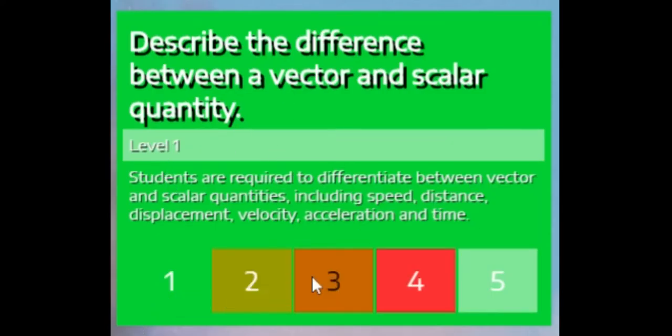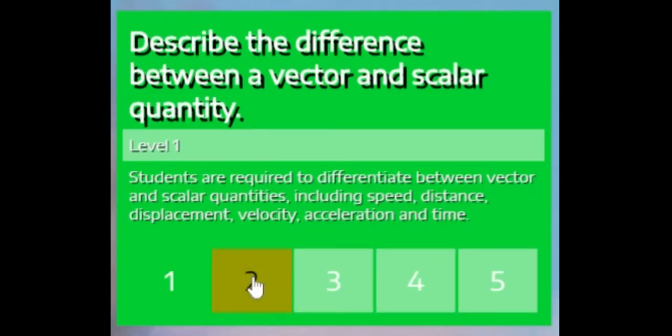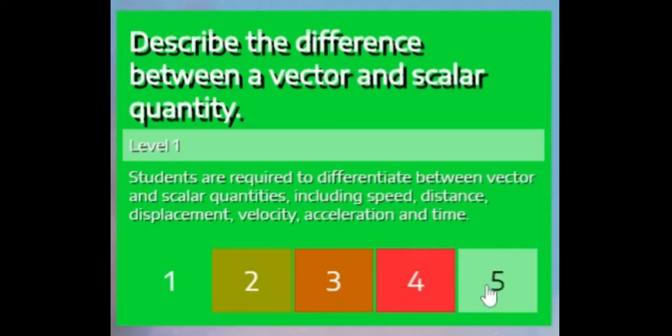Now at the bottom here you have a scale, one, two, three, four, five, and you'll notice if I click one, just one is highlighted, and as I move my way up, they successively get enabled.